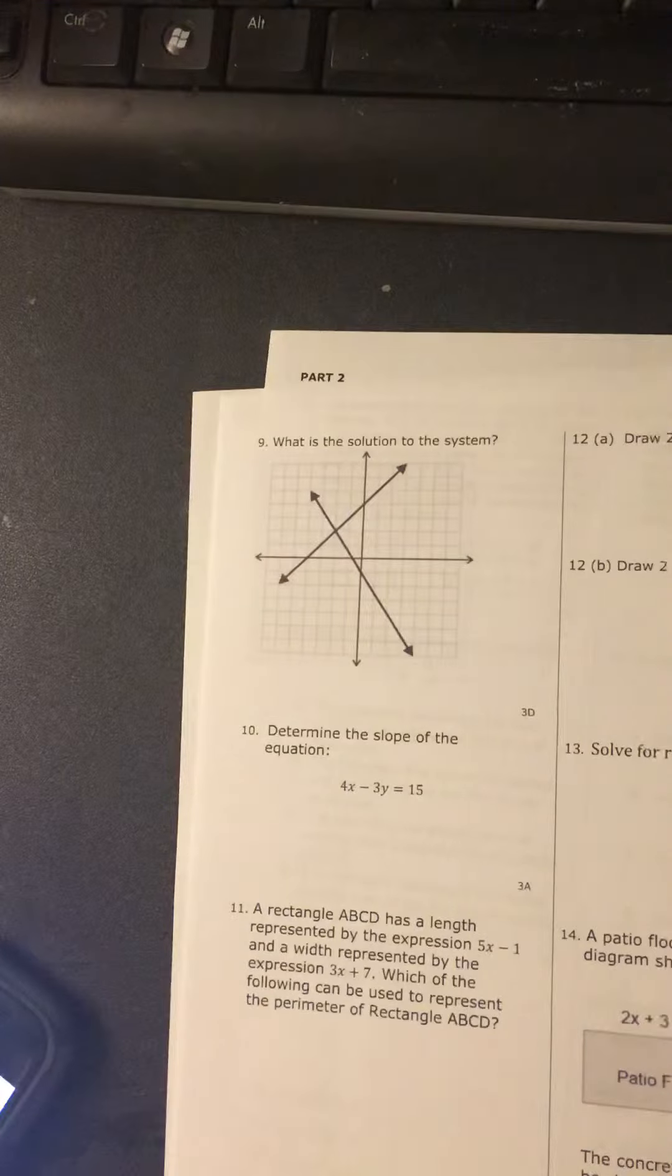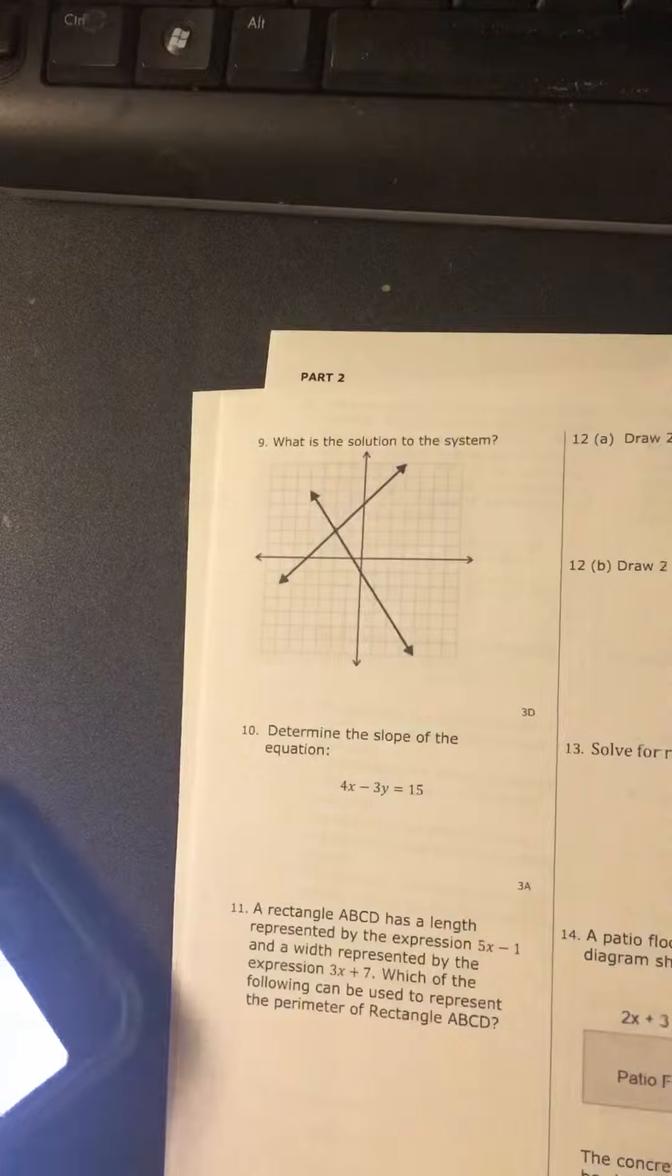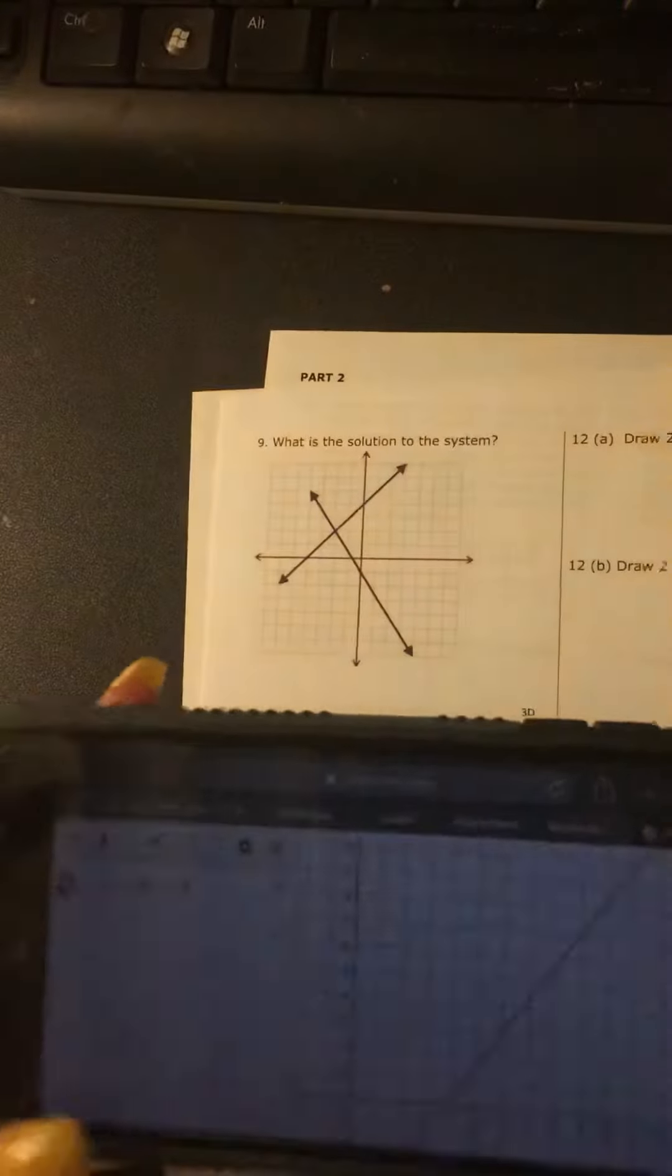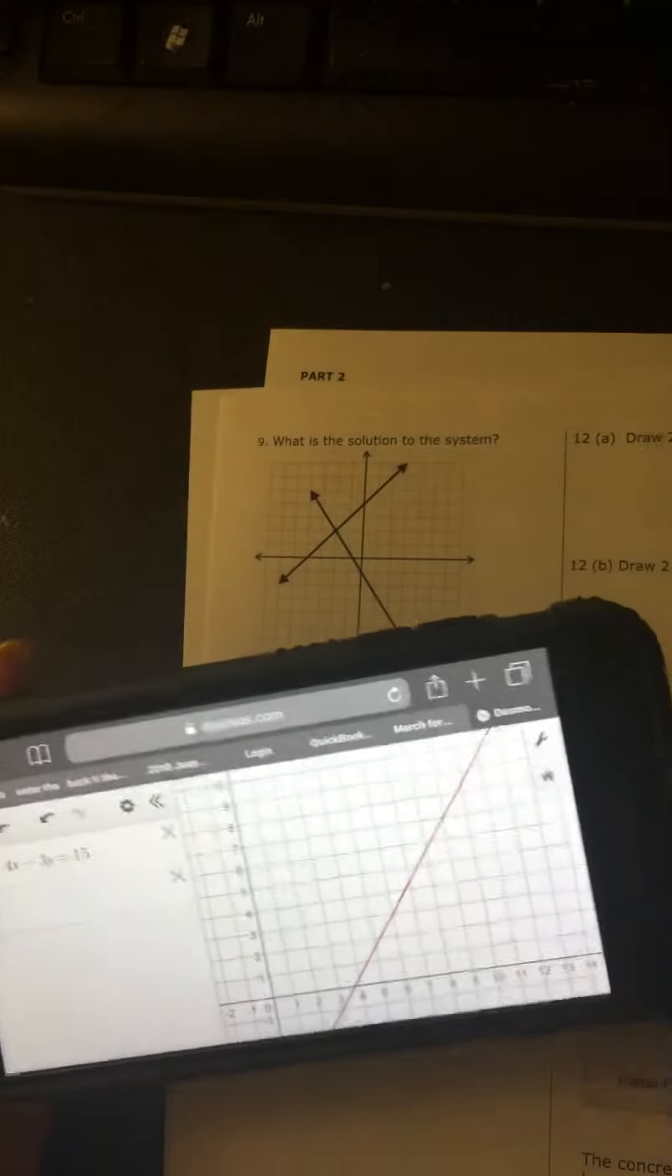Determine the slope of the equation 4x minus 3y equals 15. And you use your decimals and you type it in. I turned off my minor grid, so it's easier for me.